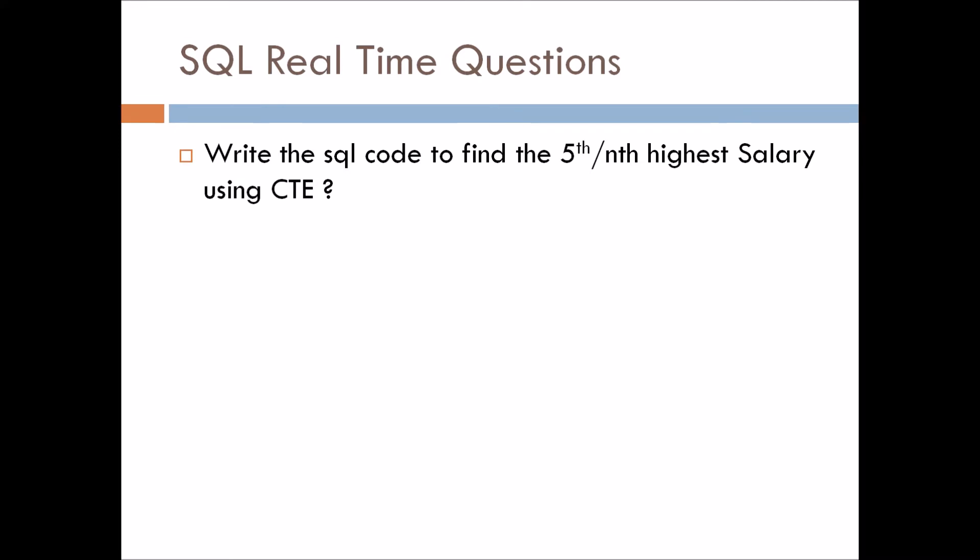Write the SQL code to find the fifth or the nth highest salary using CTE — that is common table expressions. In this way they can ask you any number: fifth, sixth, tenth — any number they can ask, that's why I have mentioned nth here. They have purposely asked you to write this code through a CTE so that they get to know that you know about CTE also. Think of the answer.